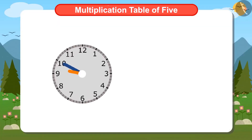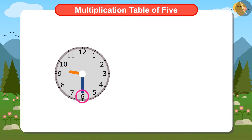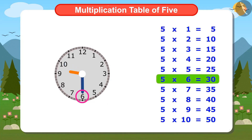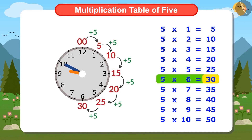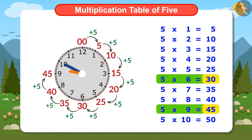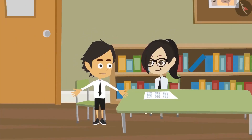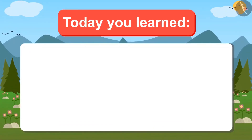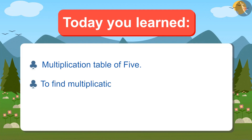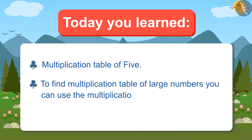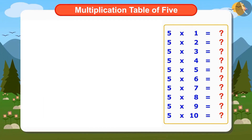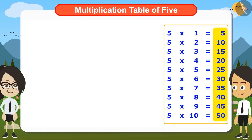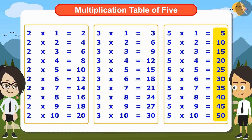Yes, now look at the clock. When the minute hand is at 6, reading the multiplication table of 5 till 6 will tell that it is 30 minutes. And when it's on 9, it will be 45 minutes. Yes, this is the right way to read time. Today we have learned the multiplication table of 5 and also got to know that to find the multiplication table of large numbers, you can use the multiplication table of small numbers, like Vandana used the multiplication tables of 2 and 3 to find out the multiplication table of 5.